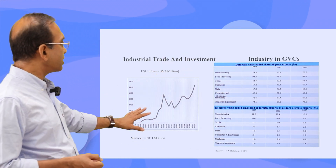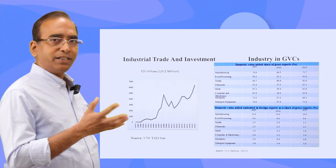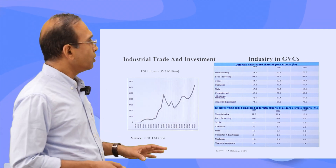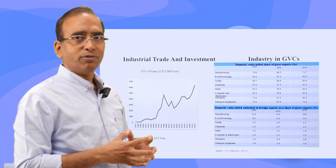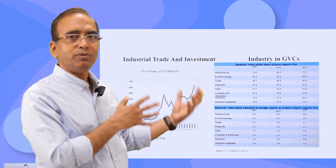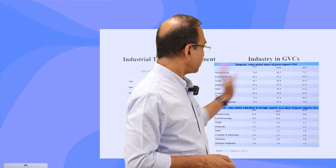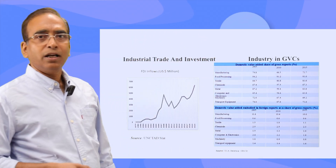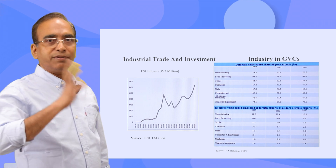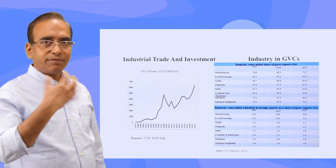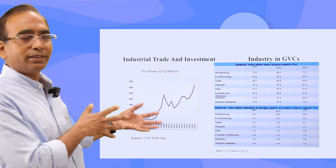Now let's come to the trade part. One important concept is the global value chain (GVC), defined in two ways — forward and backward linkages. Backward linkage refers to domestic value added in gross exports: whatever we are exporting, what is our domestic value addition? Gross exports minus domestic value additions equals the foreign input. In totality, around 72.7% of India's manufacturing exports in 2015 represented domestic value addition, meaning 27% was the imported component — so our backward linkage is around 27%.